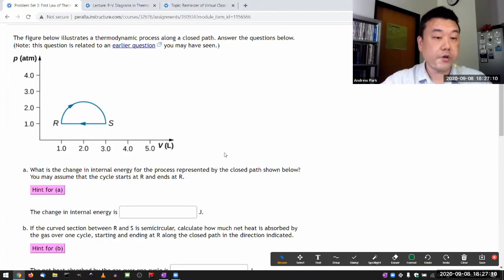The figure below illustrates a thermodynamic process. The process from S to R has a name. It's an isobaric contraction.